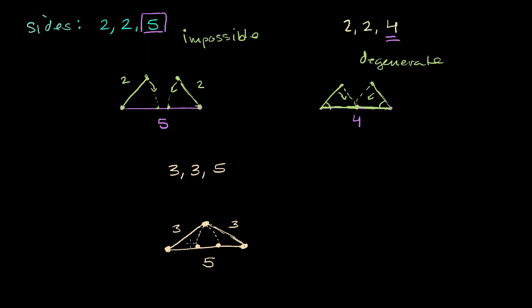So this right over here is the only triangle that meets those constraints. You could rotate it and whatever else, but if you rotate this, it's still the same triangle. This is the only triangle that has sides of length 3, 3 and 5. You can't change any of the angles somehow to get a different triangle.